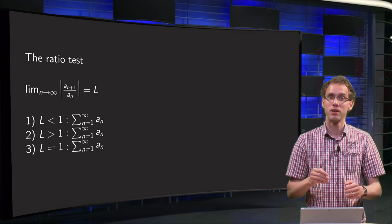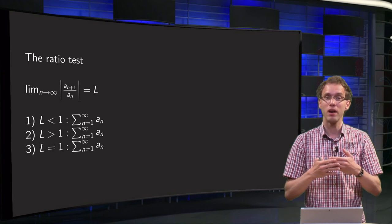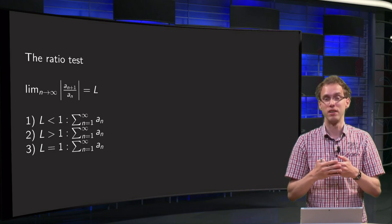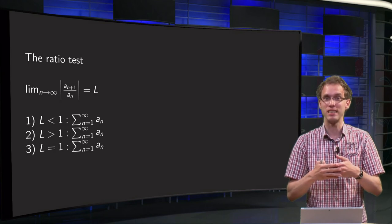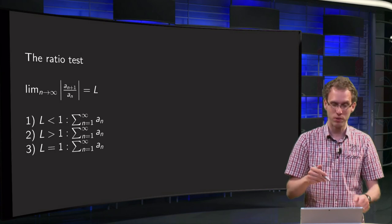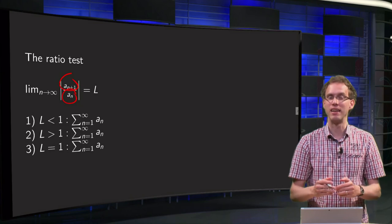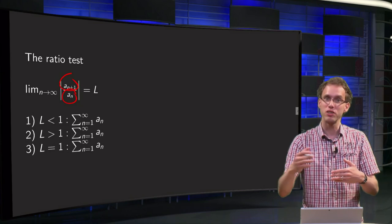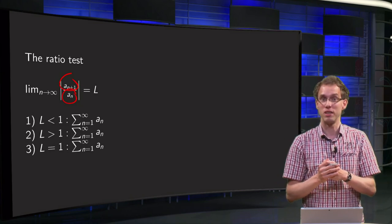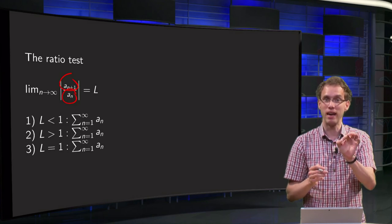So what are you going to do? You are going to look at the terms of the series, the respective sizes in the tail. So you are going to compare a_{n+1} divided by a_n. You are going to look at how fast your tail is going to decrease to 0.